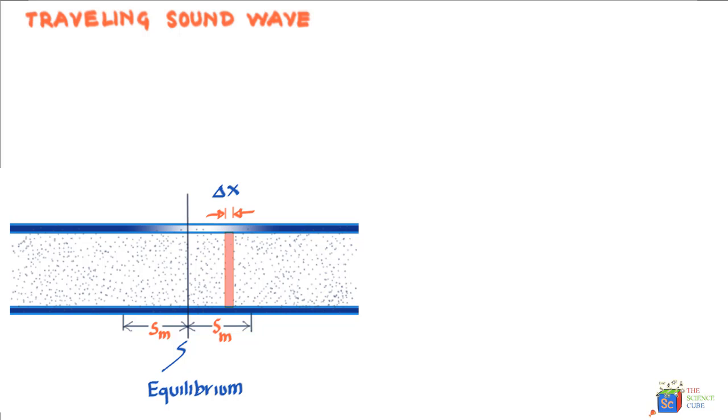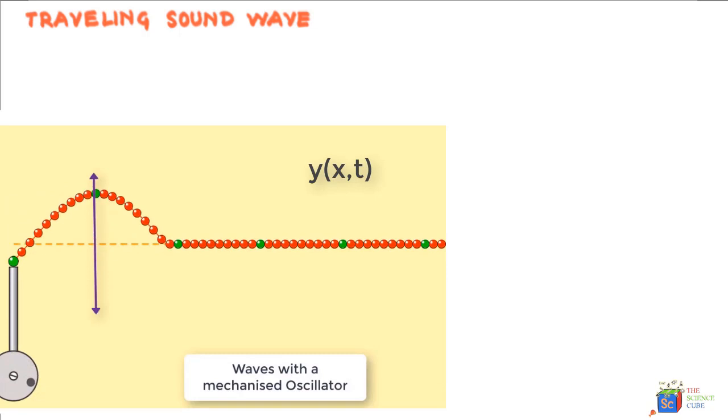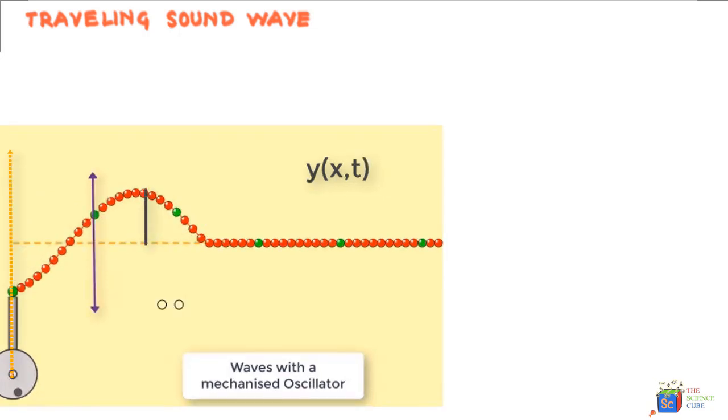In a transverse wave, we write the displacement of a particle as y(x,t), which essentially means the y displacement of particle at position x at any time t.